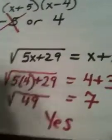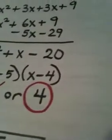Is the square root of 49 equal to 7? Yes. So what does that mean about the number 4? It works. So the only answer to this problem is the number 4.